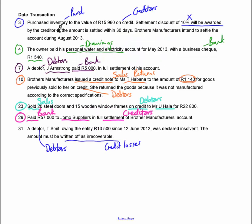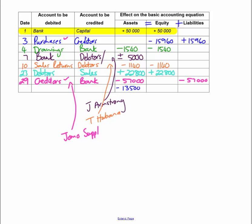Transaction on the 31st: debtor T. Smith, owing us R13,500 since the 12th of June, is declared insolvent — his debt must be written off. The asset (debtors) must come down by R13,500. Credit losses is an expense decreasing the owner's wealth. Debit credit losses (expense), and credit the debtor T. Smith (asset decreasing). That's question 1 answered.